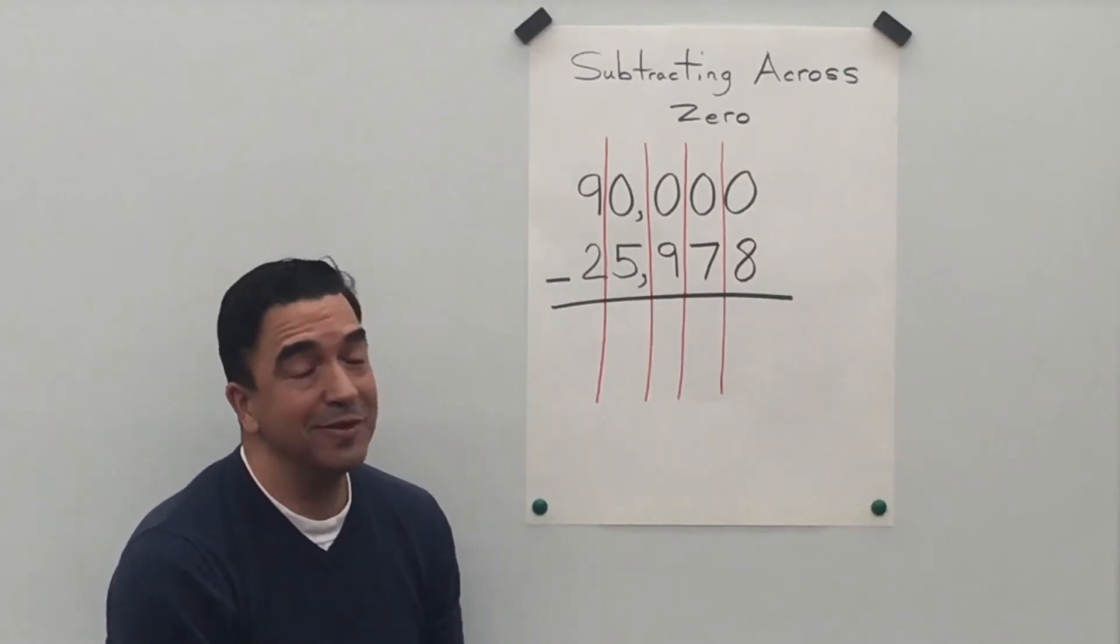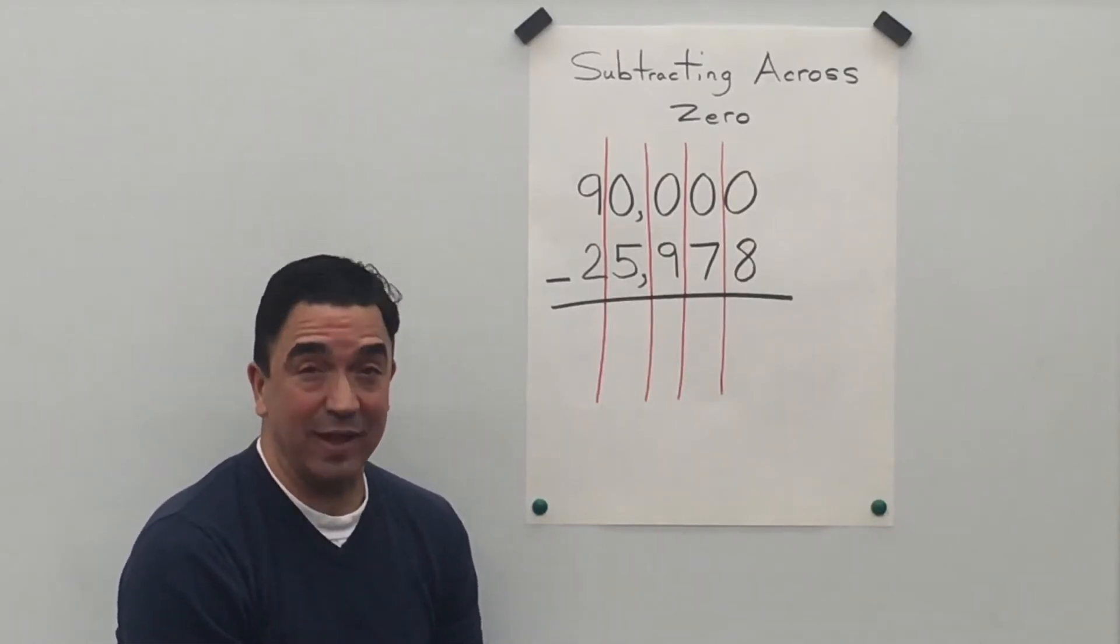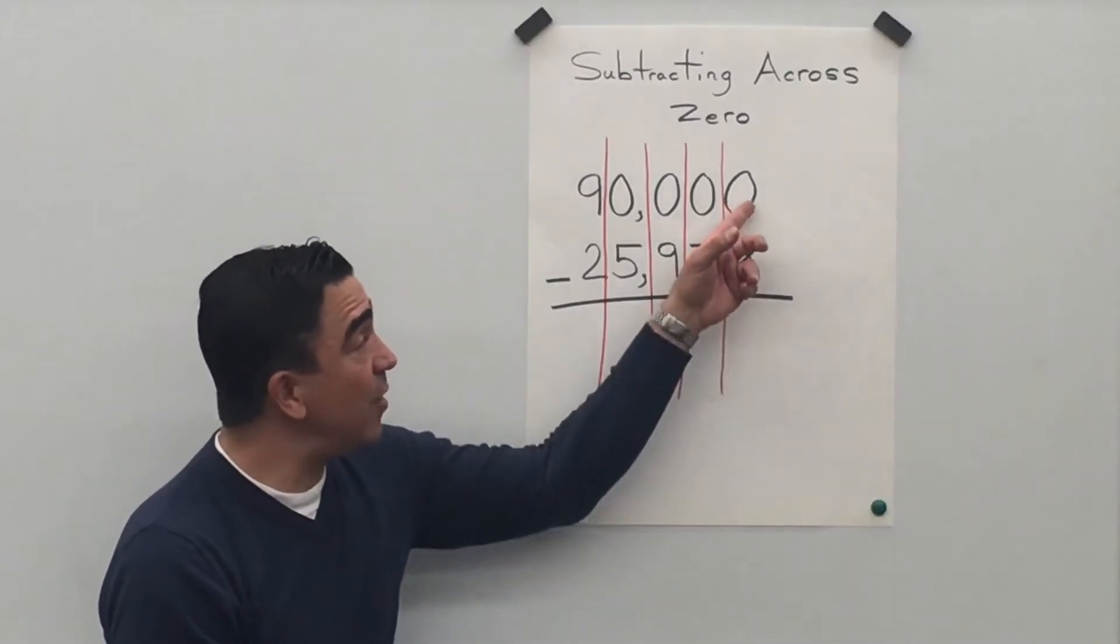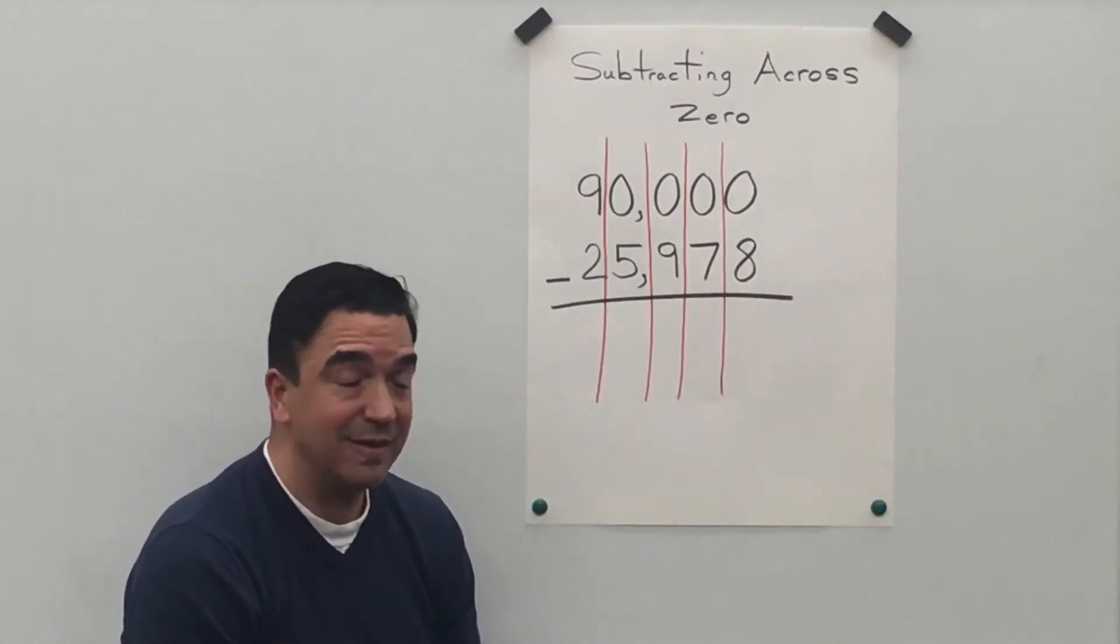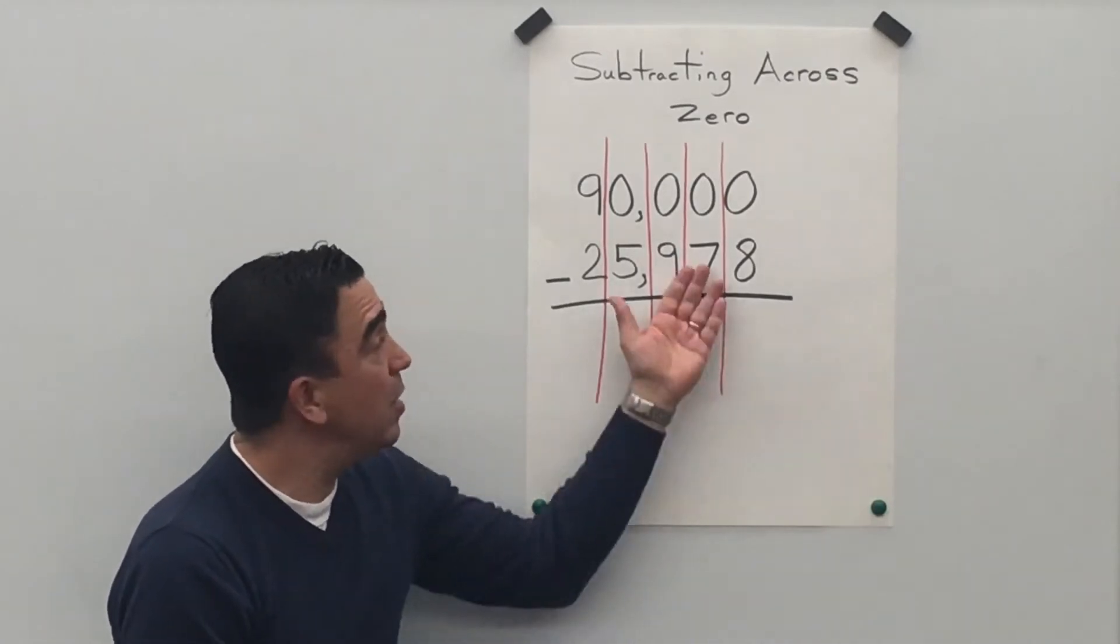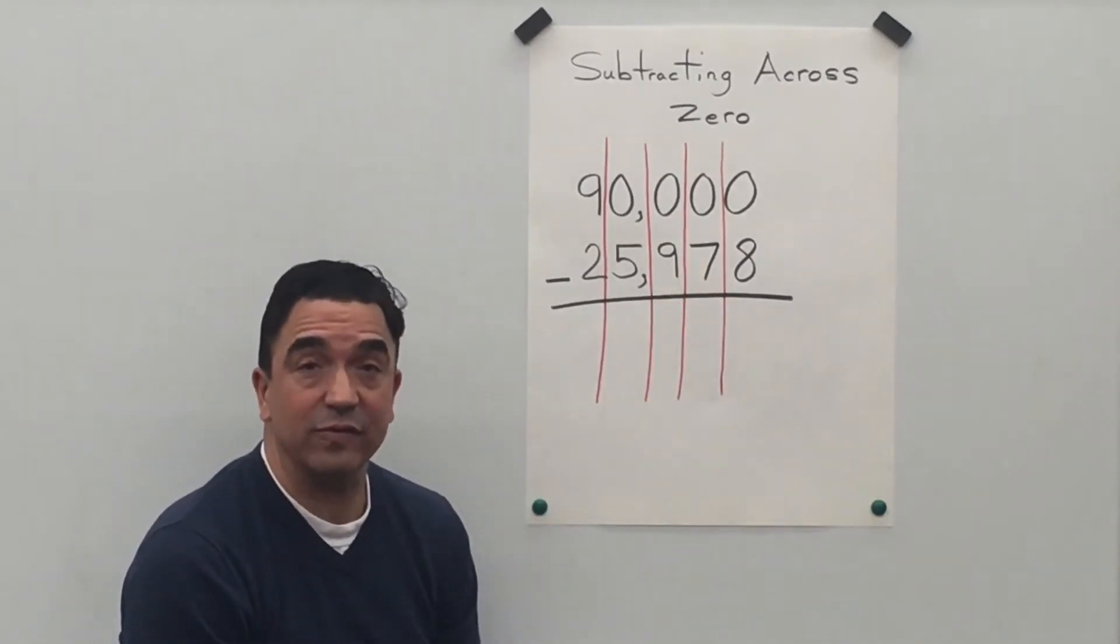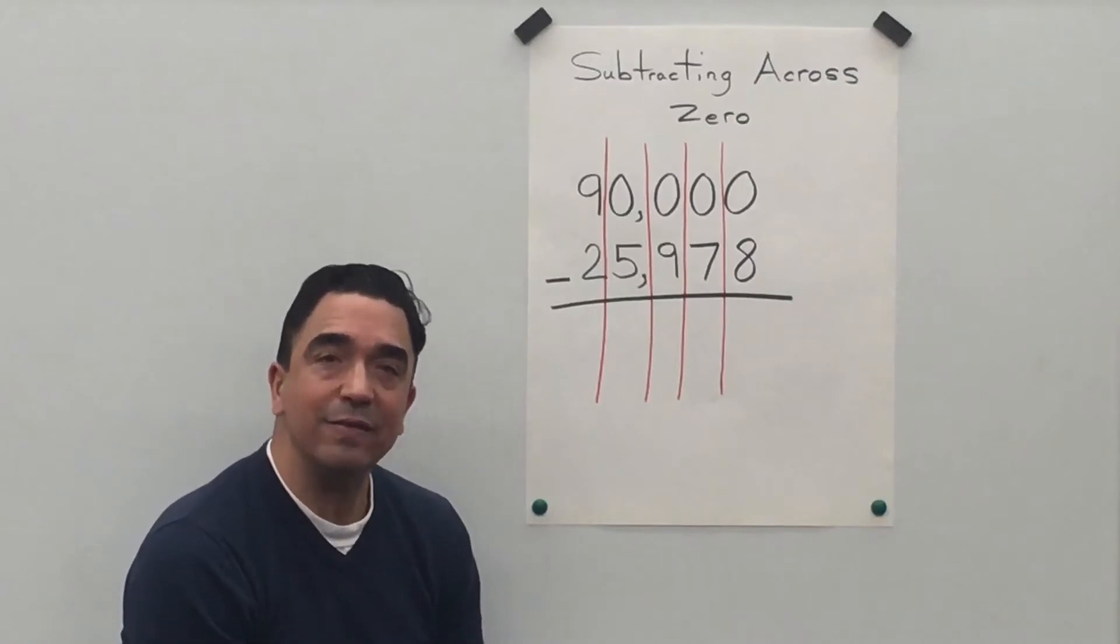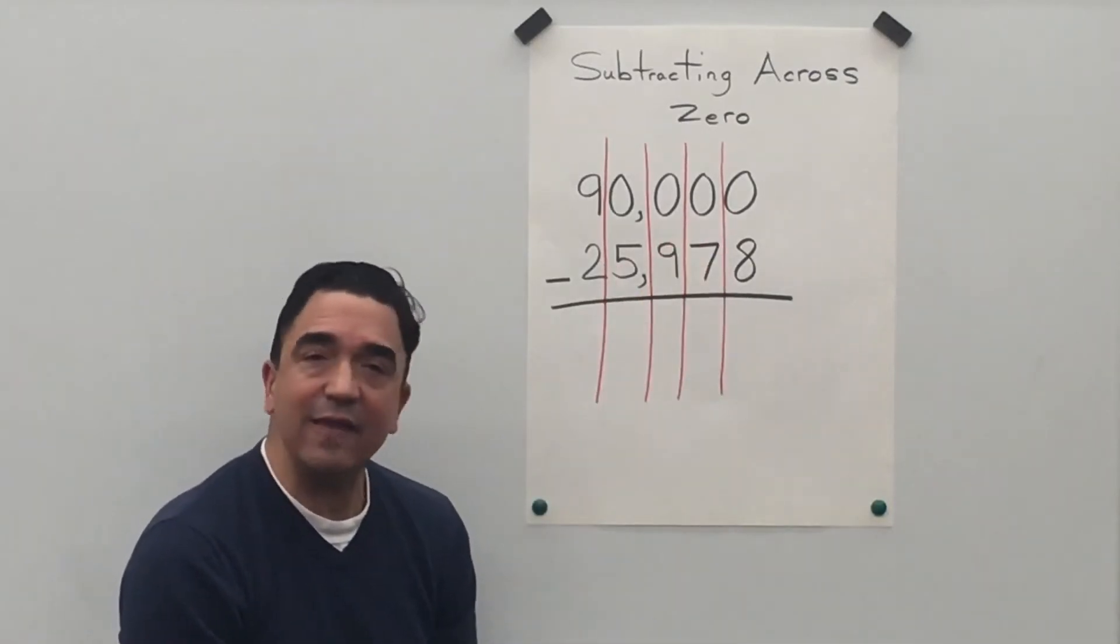Well, we're going to start at the ones place. Zero minus eight. Can't do it! So we need to borrow from the tens place. But you know what? There's nothing in the tens place.